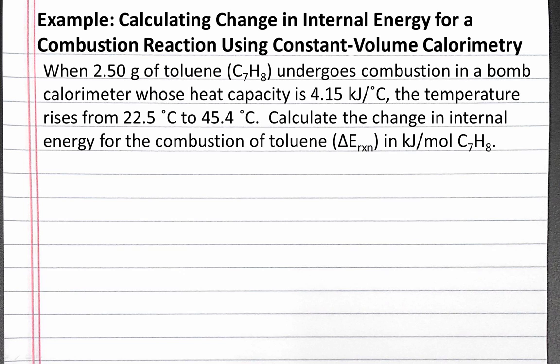Our problem reads: when 2.5 grams of toluene undergoes combustion in a bomb calorimeter whose heat capacity is 4.15 kilojoules per degree Celsius, the temperature rises from 22.5 degrees Celsius to 45.4 degrees Celsius. Calculate the change in internal energy for the combustion of toluene in kilojoules per mole of toluene.